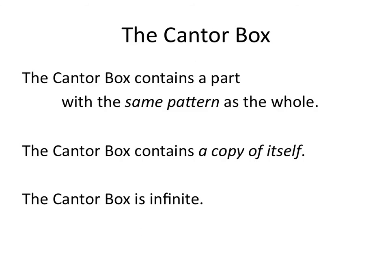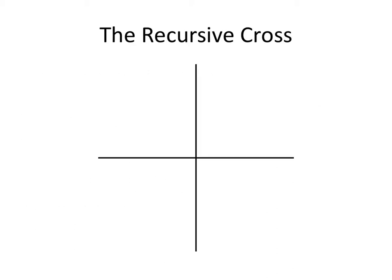The Cantor box contains a part with the same pattern as the whole. The Cantor box contains a copy of itself — that is, each lower right-hand corner of the box is a copy of the whole box — and so the Cantor box is infinite.